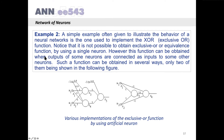Here is another example — a neural network. A simple example often given to illustrate the behavior of a neural network is the one used to implement the XOR, or exclusive-or, function. Notice that it is not possible to obtain the exclusive-or function using a single neuron. However, this function can be obtained when outputs of some neurons are connected as inputs to others. Such a function can be obtained in several ways, with only two of them shown in the following figure. This is one implementation for the XOR function, and this is another. There may be other implementations as well.